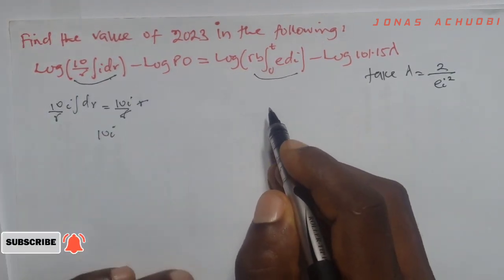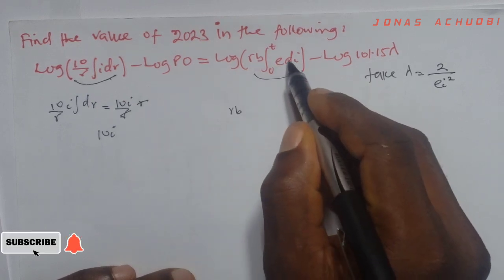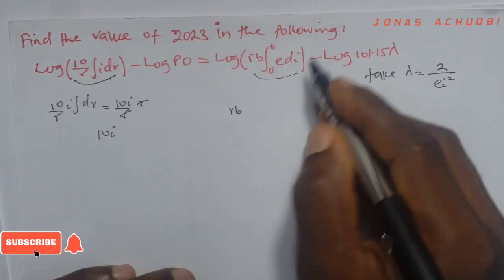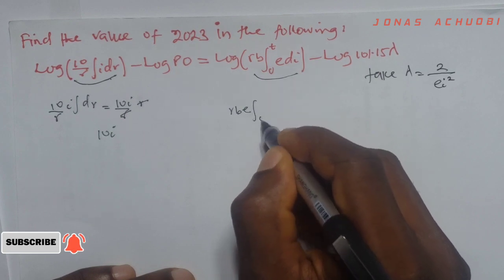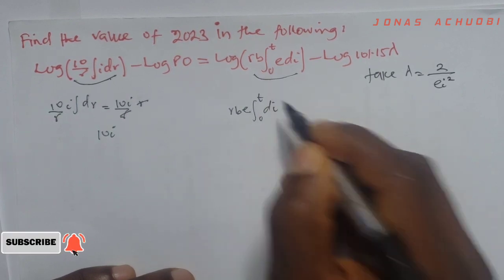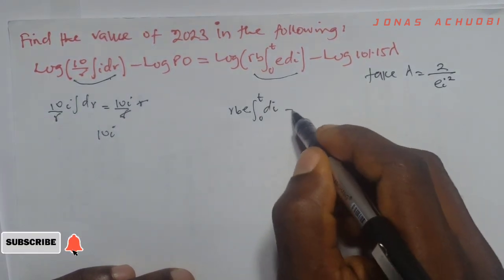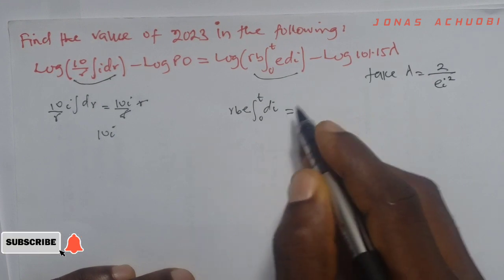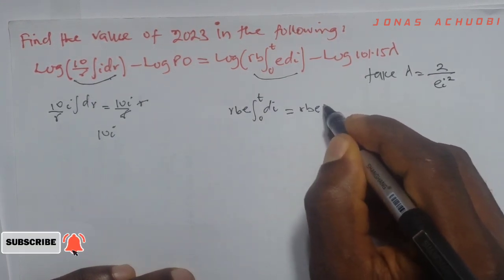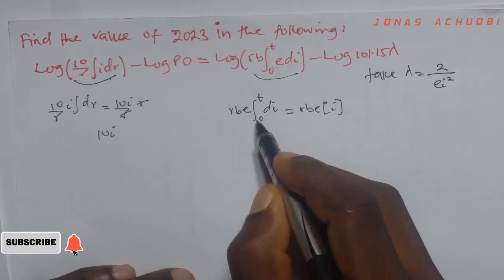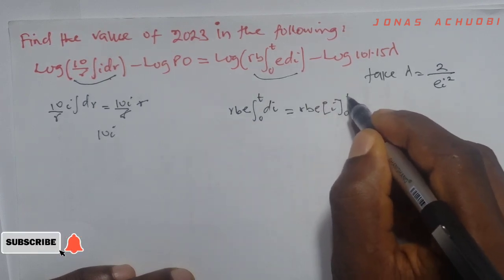Next to this integral, we have here rb. Now integral is with respect to i, so we can take e out and we have integral from 0 to t of di. So when we integrate with respect to di, we get i. So that becomes rbe i from 0 to t.